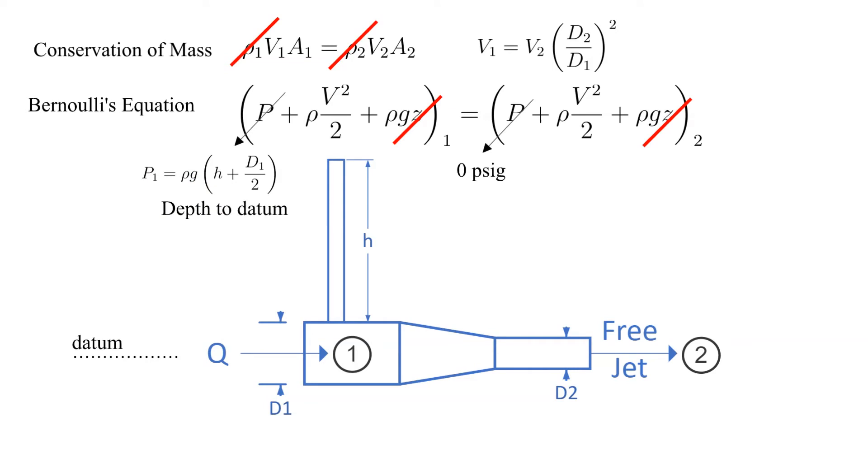With no viscous effects and a straight run of pipe the streamlines will be straight. The only pressure gradient in the vertical direction is due to the height of the water column. The equation for P1 is given here.